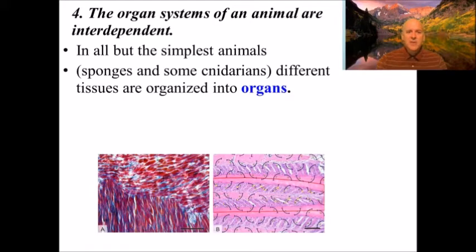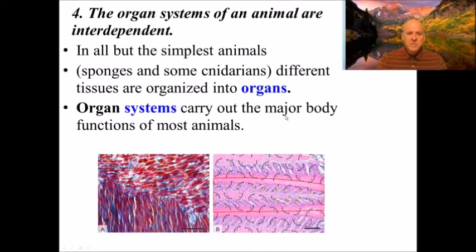In all but the simplest animals you have organs. The simplest — sponges and cnidarians — do not have tissues organized into organs. A sponge is just many cells put together without similar cells forming tissues. Some cnidarians like jellyfish do have tissues and organs, but some do not. Organ systems carry out the major body functions of most animals — for example, the digestive system, the respiratory system, and the circulatory system are each made up of several different organs.